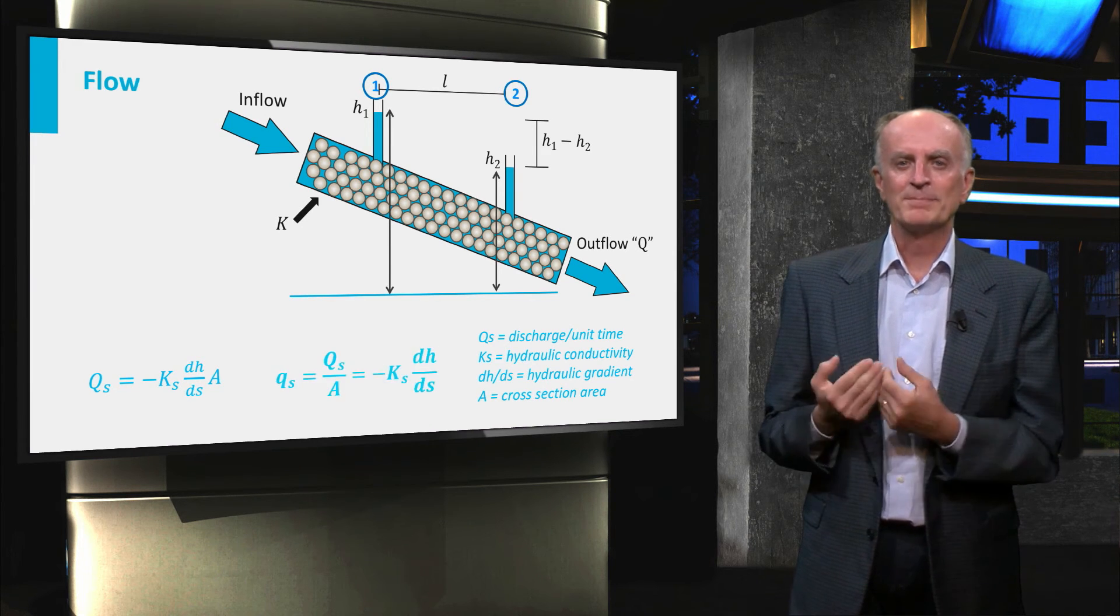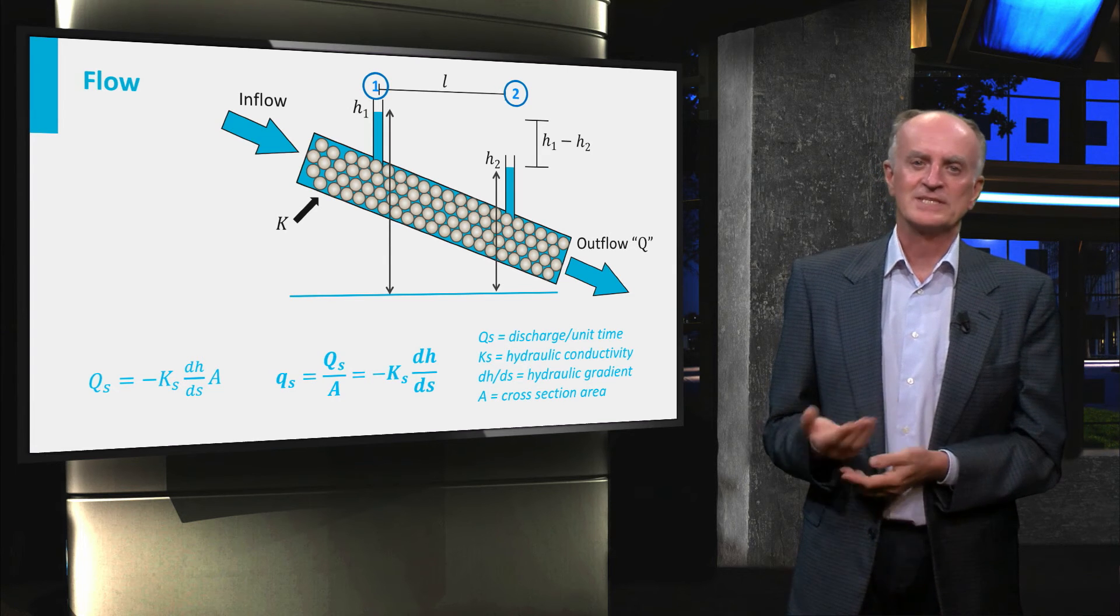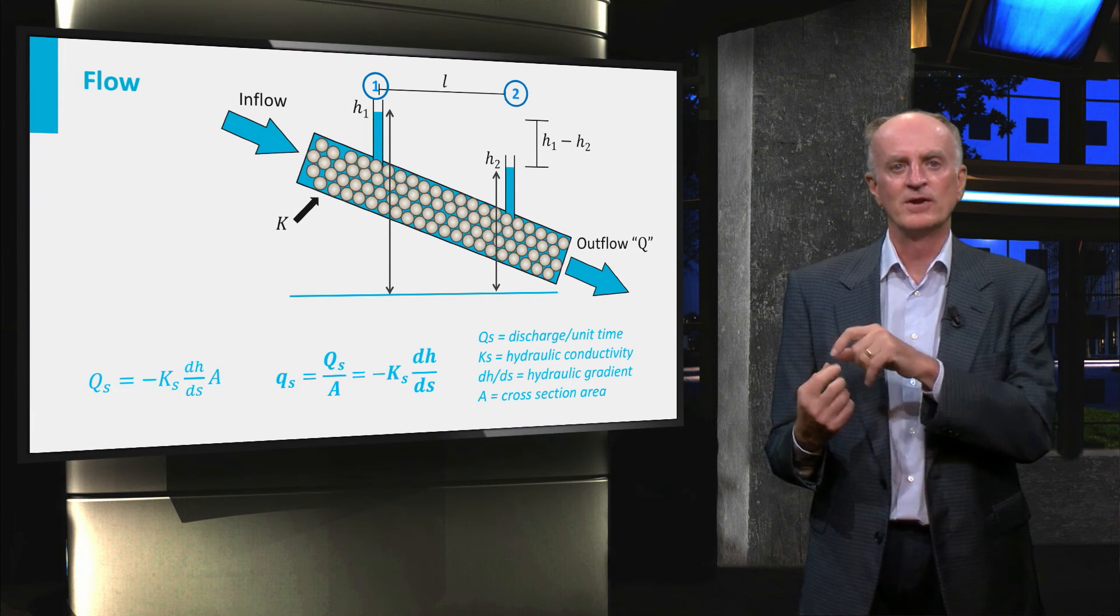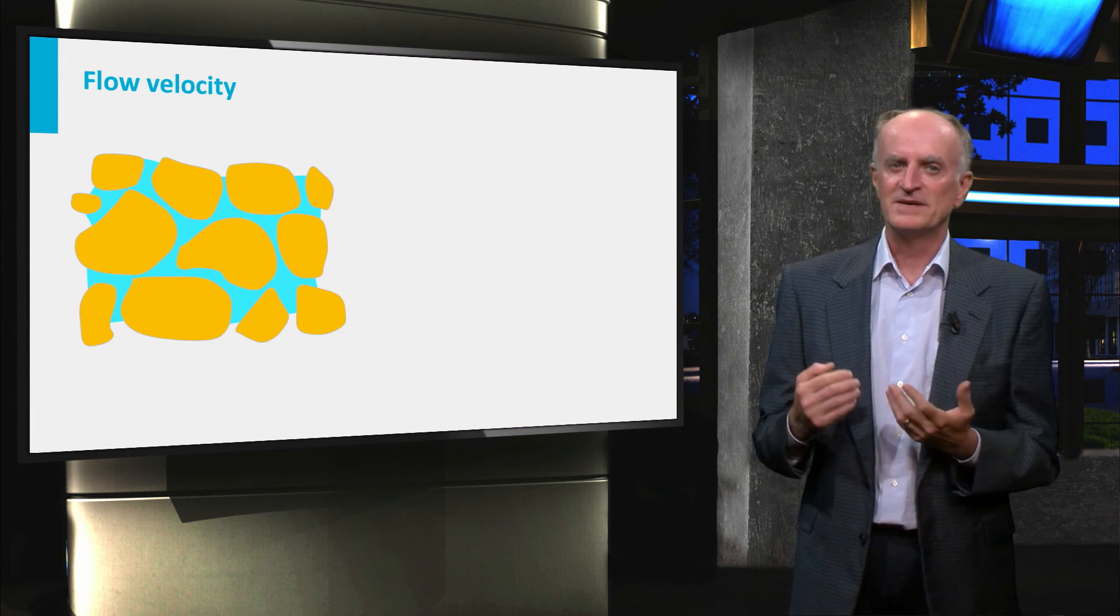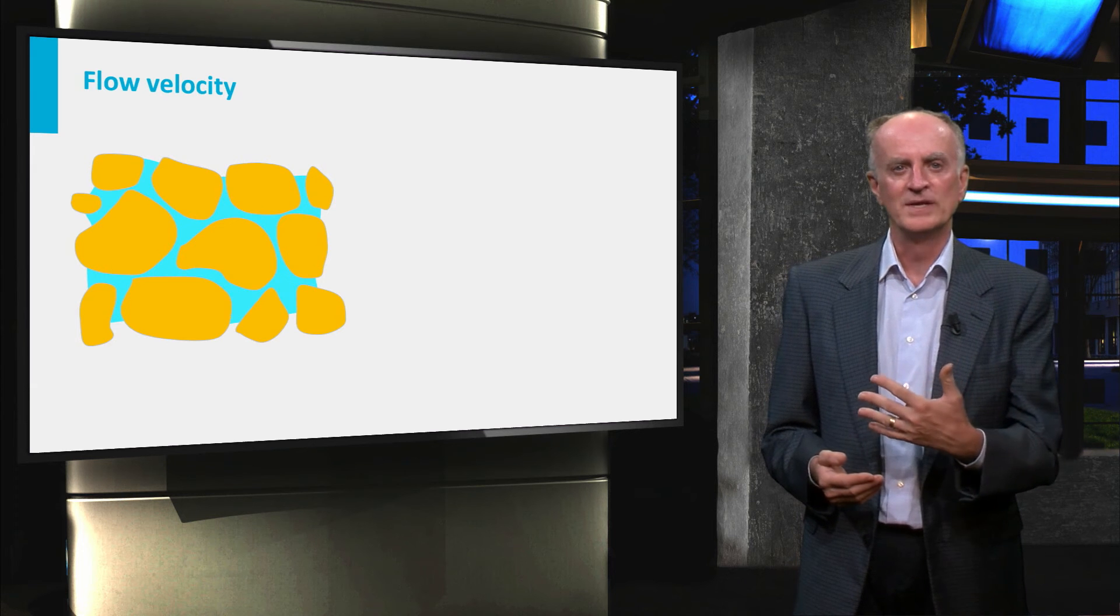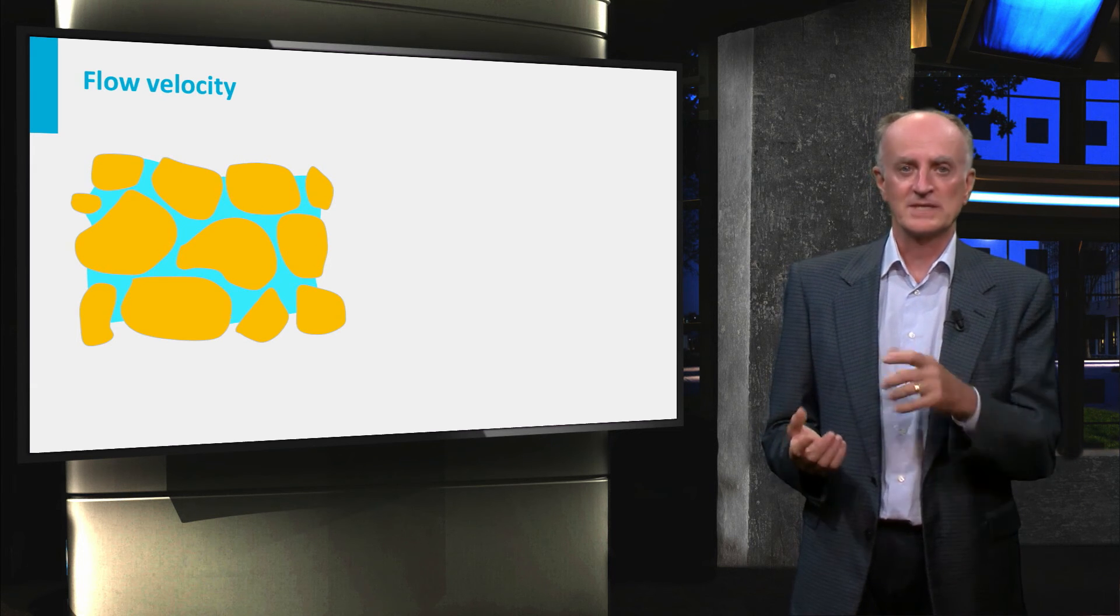A useful parameter is the specific discharge, which is the discharge normalized by the surface across which the fluid flows. The specific discharge provides a description of the average velocity of the fluid, water in our case, across a unit surface.